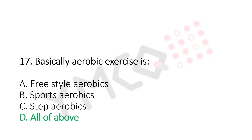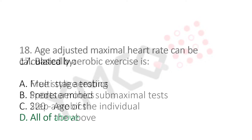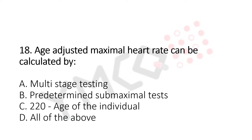Let's move to question number 18. Age-adjusted maximal heart rate can be calculated by: Option A, multi-stage testing. Option B, predetermined sub-maximal test. Option C, 220 minus age of the individual. Option D, all of the above. And the answer is Option D, all of the above.